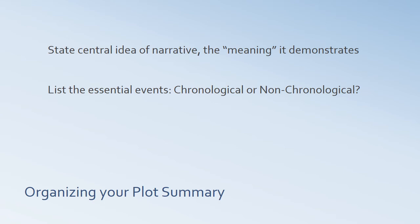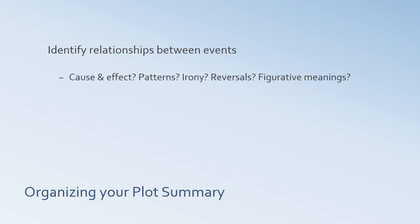Let's talk about how to organize a plot summary. You begin by stating the central idea of the narrative — what meaning does it demonstrate? Then you give a list of the essential events, telling what happens, and make the choice between chronological or non-chronological order. Think about the relationship between the events and explain this clearly. Look for obvious cause and effect patterns, any repetitive patterns or similarities, echoes, and irony — where one thing seems like it should happen but an unexpected event happens instead. Are there reversals of status or fortune?